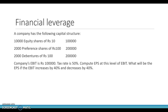Imagine a company has the following capital structure: 10,000 equity shares of Rs.10 each, totalling Rs.1,00,000; 2,000 preference shares of Rs.100 each, totalling Rs.2,00,000; and 2,000 debentures of Rs.100 each, totalling Rs.2,00,000. The company's EBIT is Rs.1,00,000 and the tax rate is 50%. Compute EPS at this level of EBIT.